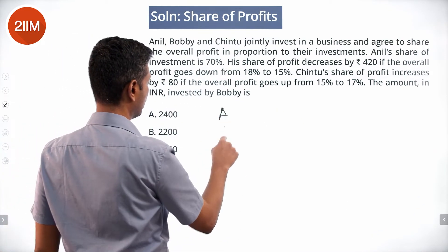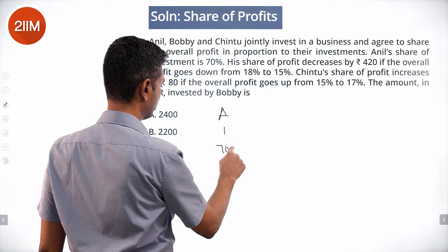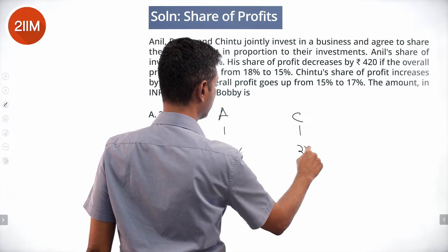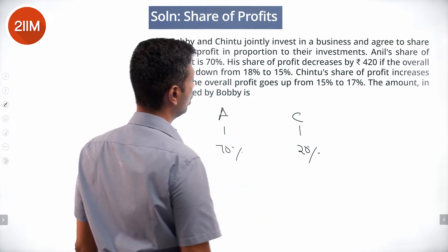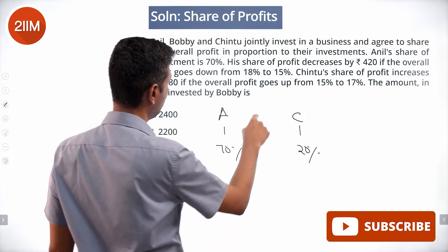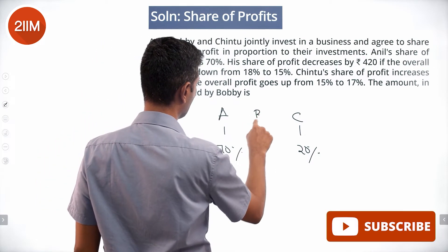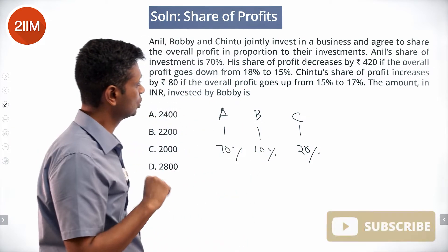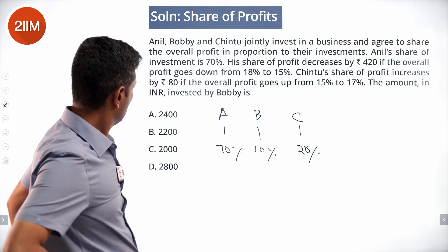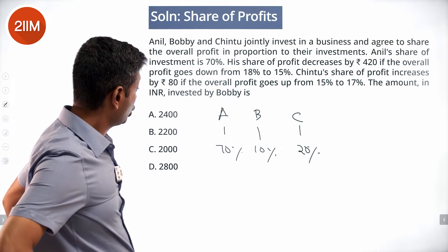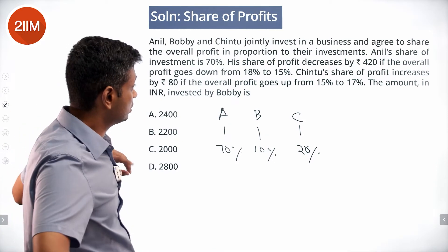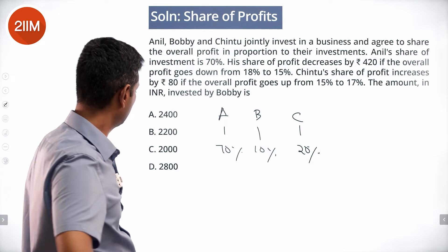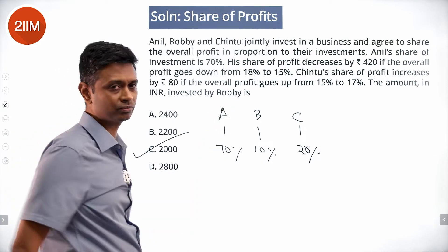Anil has put in 70%, Chintu has put in 20%, so the remaining guy — Bobby — should have put in 10% into the business. The total amount invested is 20,000, and Bobby has put in 10% of that. 10% of 20,000 is ₹2,000.